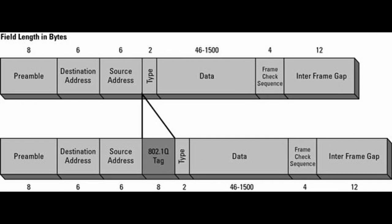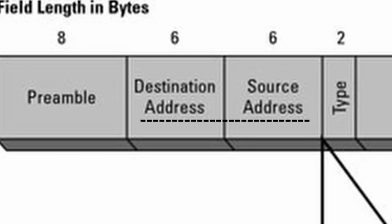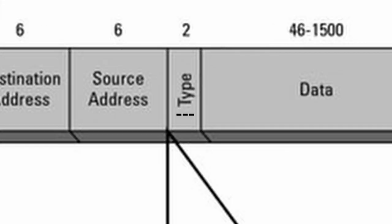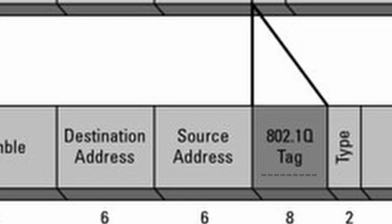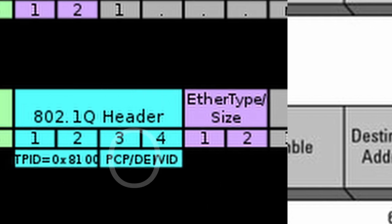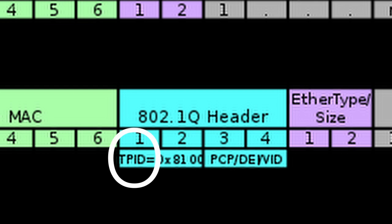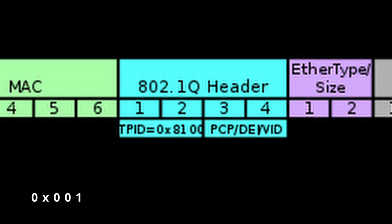At this point we should discuss tags, trunks, and access ports. Within an ethernet frame is the destination and source MAC address - the MAC header - followed by the EtherType, which determines the protocol encapsulated in the payload. When VLANs are involved, four octets or 32 bits are inserted into the frame between the source MAC address and the EtherType. This is called a tag. The first 16 bits are the Tag Protocol Identifier, identifying if the frame contains a tag, followed by the Tag Control Information. The last 12 bits contain the VID, or VLAN identifier, specifying which VLAN the frame belongs to.